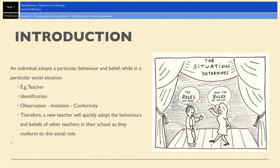This type of conformity is called identification. If you think back to your lesson on compliance and internalization and normative social influence, identification is when a person changes their public behavior and their private beliefs, but only while they're in a particular social role, situation, or with a particular group of people.